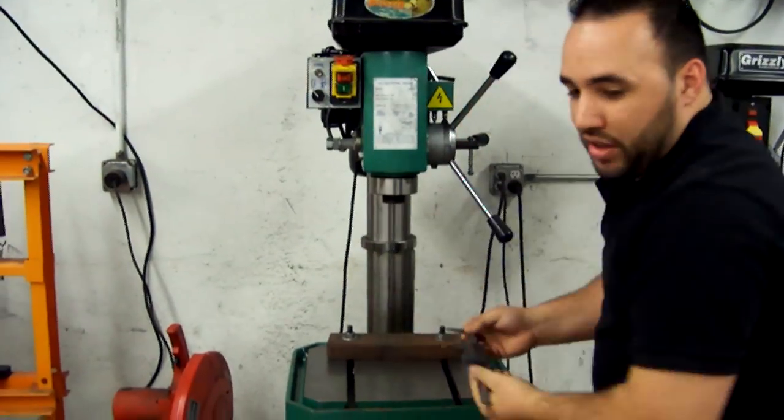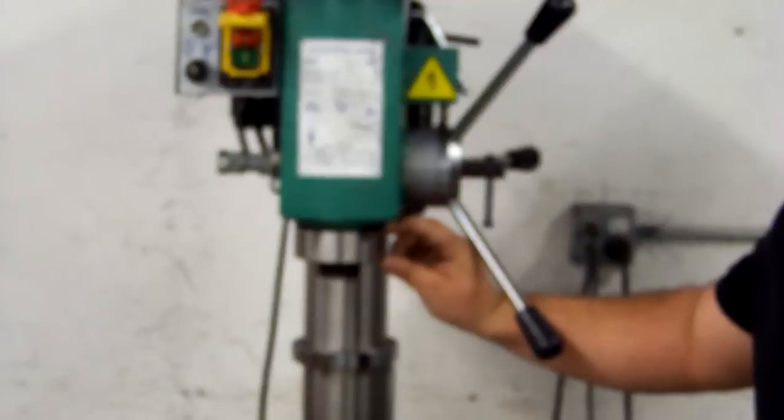Now you'll see on the PDF again, the C-dimension, which is the width of the quill, right here. This is important because it gauges the depth that the adapter will have to clamp onto.